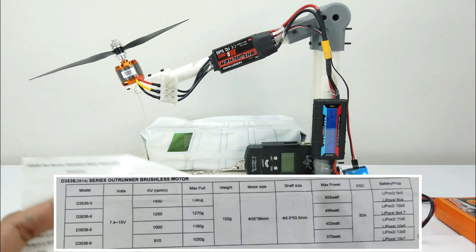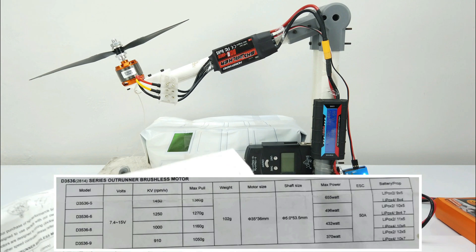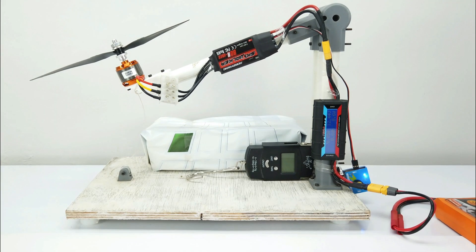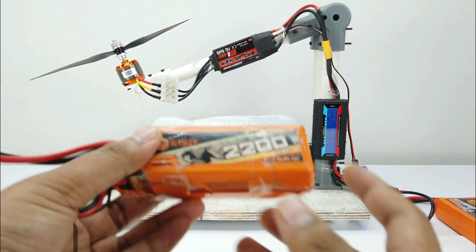If we look at the thrust chart the rated thrust here is 1160 grams for 1000kV motor. So it's exactly the same. Now I will swap this battery with the 4S battery.